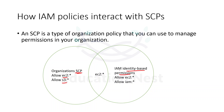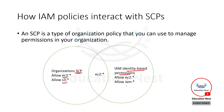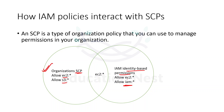So here you can see that we have the organizational SCP which is allowing EC2 and S3, and identity-based policies allowing EC2 and IAM. But at the organization level itself, I have filtered out that only EC2 and S3 are being allowed. IAM is never mentioned at the SCP level. So even if IAM is being given permission via the identity-based policy, it will not be allowed because it is already filtered out at the higher hierarchy. So the intersection of the organization's SCP and the identity-based policy would be the final permissions given to a user.